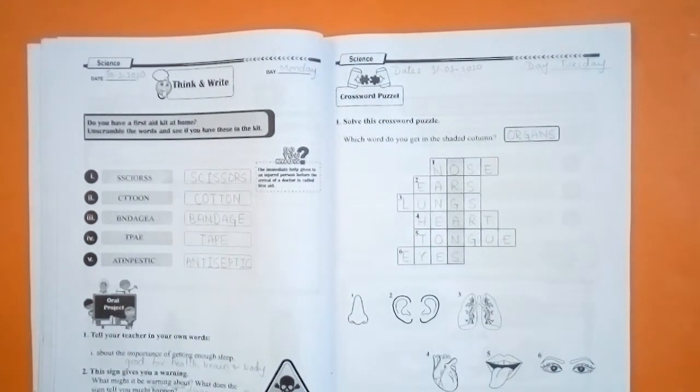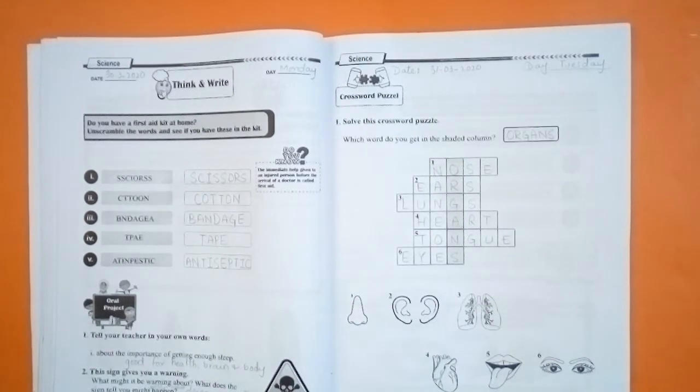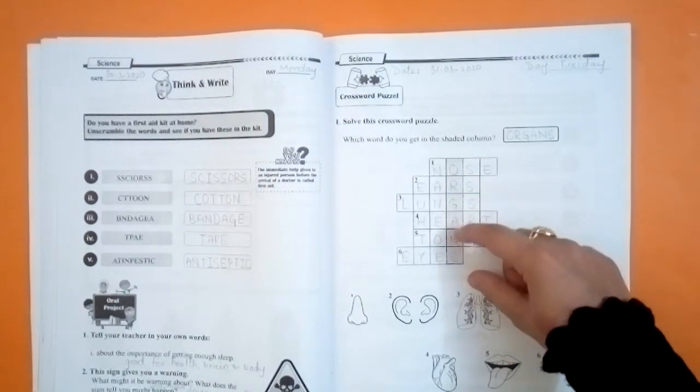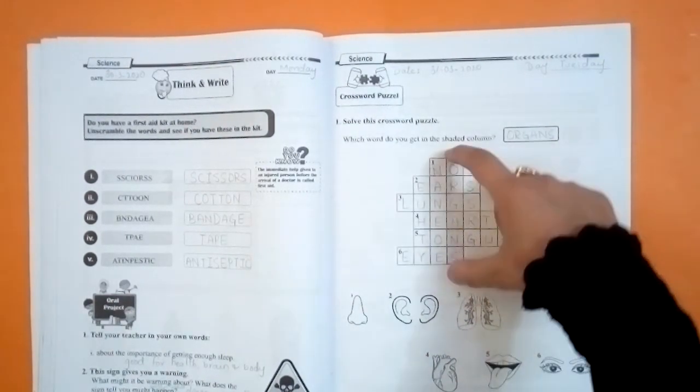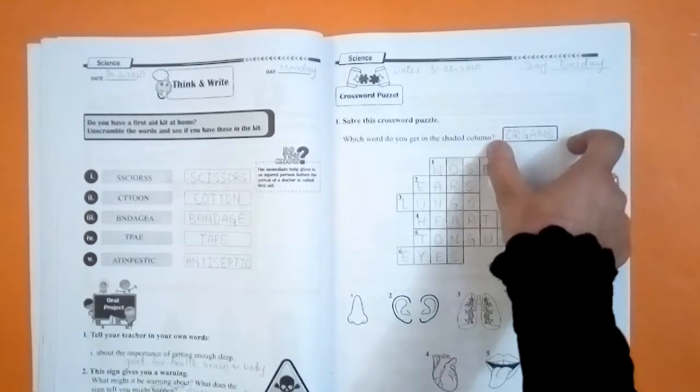Now let's see what word is in shaded portion. What word is coming to us? O-R-G-A-N-S. Organs. Which you have to write in this space.